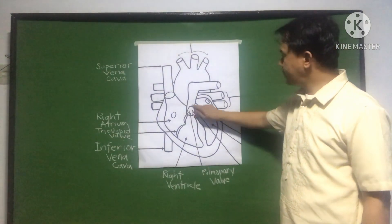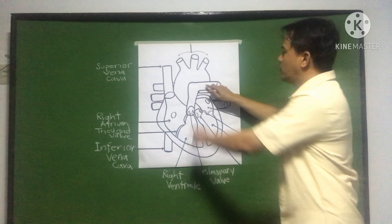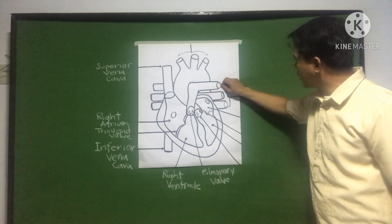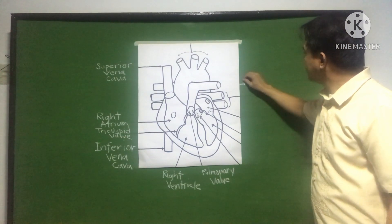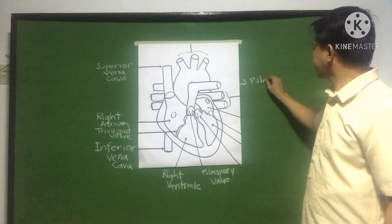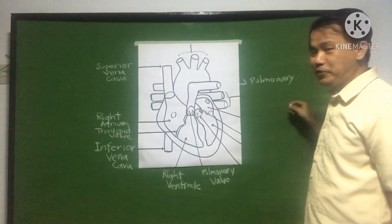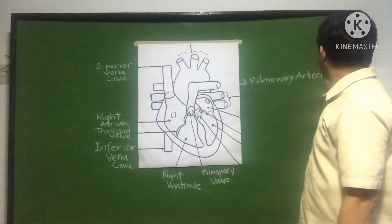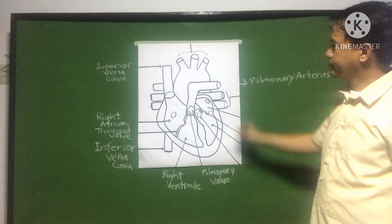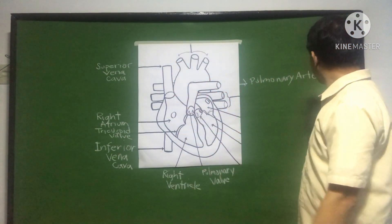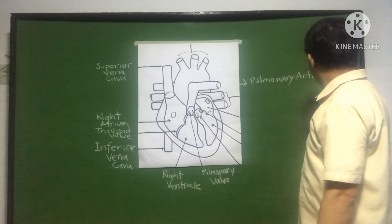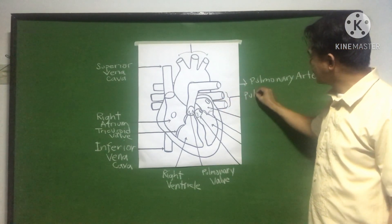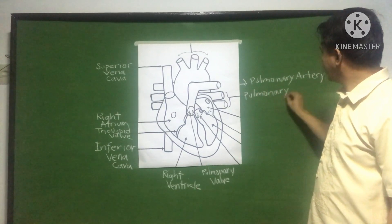The blood exits here through these two vessels, and this is called the pulmonary artery — also related to the heart rate. Next, this is called the pulmonary veins.